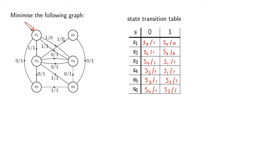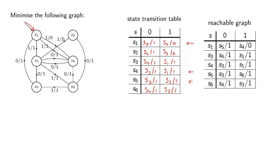Now we want to find the reachable part of the graph — which states can we reach from s1? Starting from s1 we can go to s4 and s5. From s4 and s5 we can reach s1, s3, and s6. The only state not yet considered is s2. Looking at the state transition table, we see there is never a transition that goes to s2, so s2 is not reachable in our state transition graph.